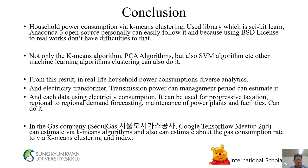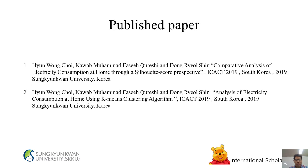Conclusion: Household power consumption via K-means clustering uses the Scikit-learn library with Anaconda 3. Open source tools allow operators to easily follow it. Not only the K-means algorithm, but also PCA and ICBM algorithms and other machine learning clustering algorithms can also be applied. From this result, in real life, household power consumption analytics and electric transmission power management can be estimated, and applications include progressive taxation, regional demand forecasting, and maintenance of power plants.